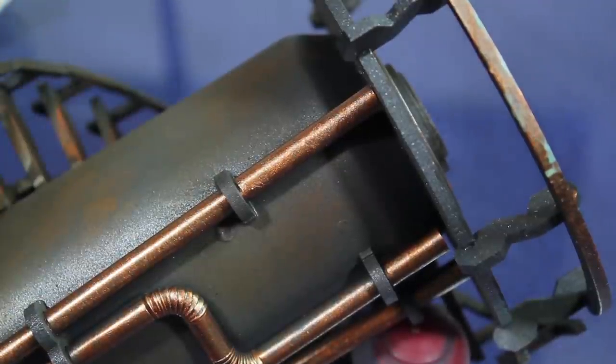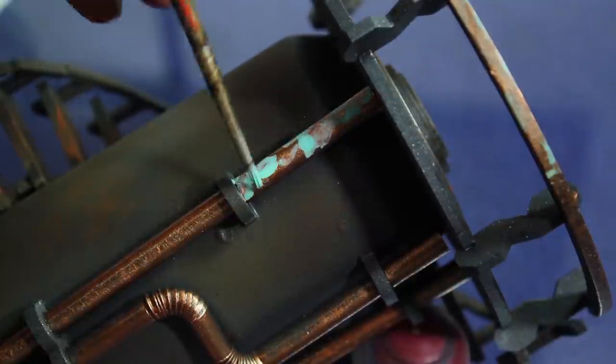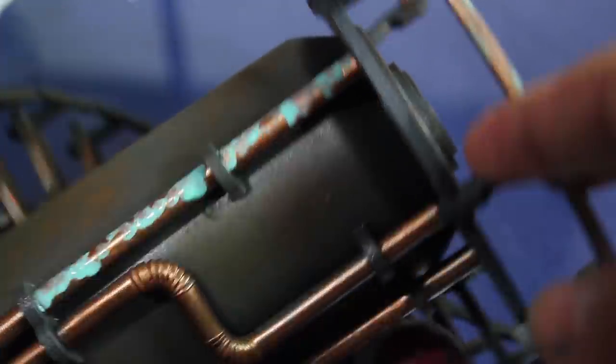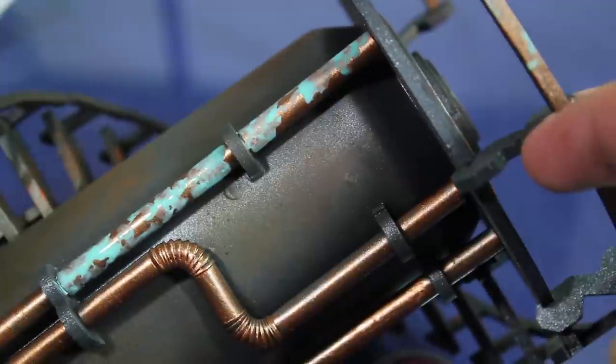Once the Hashut Copper was dry, I went in with some Vallejo Game Effect Verdigris and layered it on pretty thick. I would eventually go back and knock it down with a little watered-down Hashut Copper, but I did want the colors to be very strikingly different from the rest of the model.